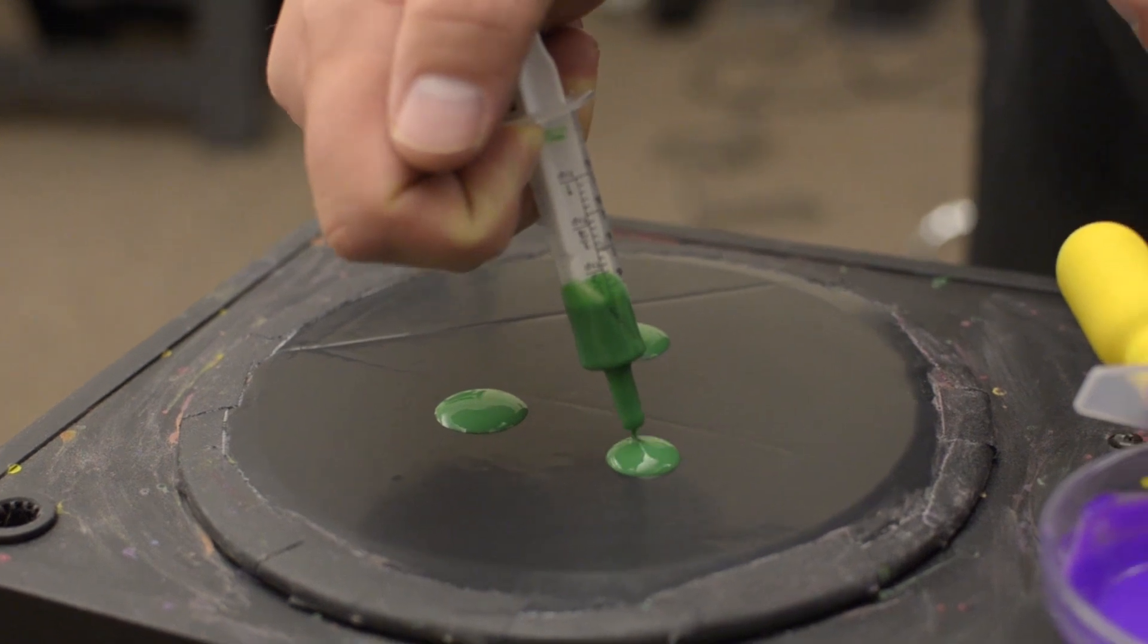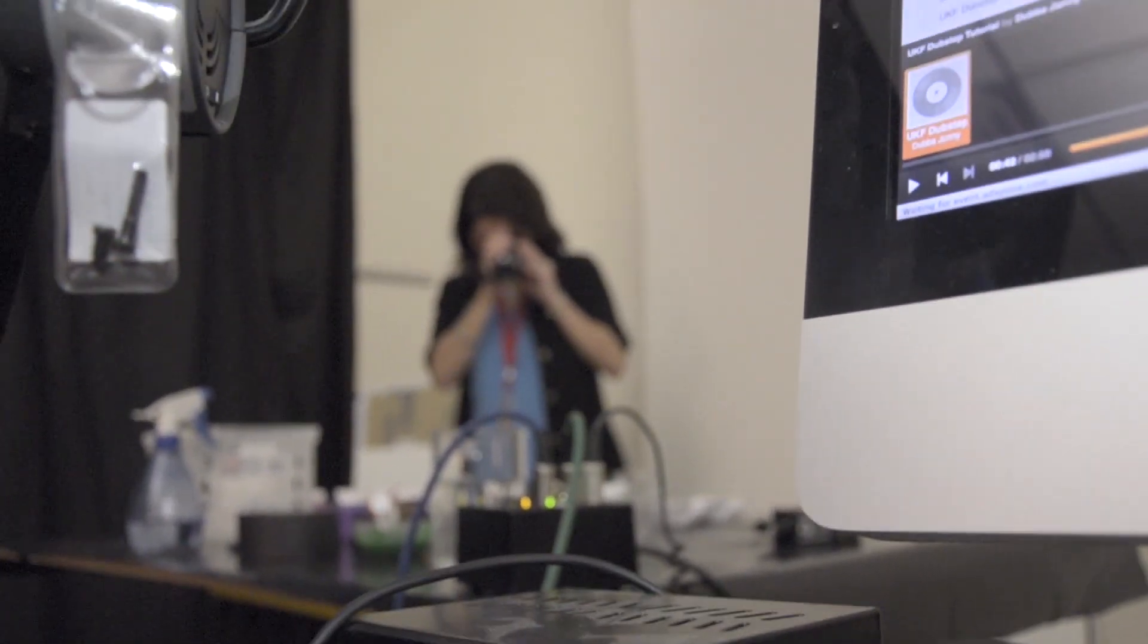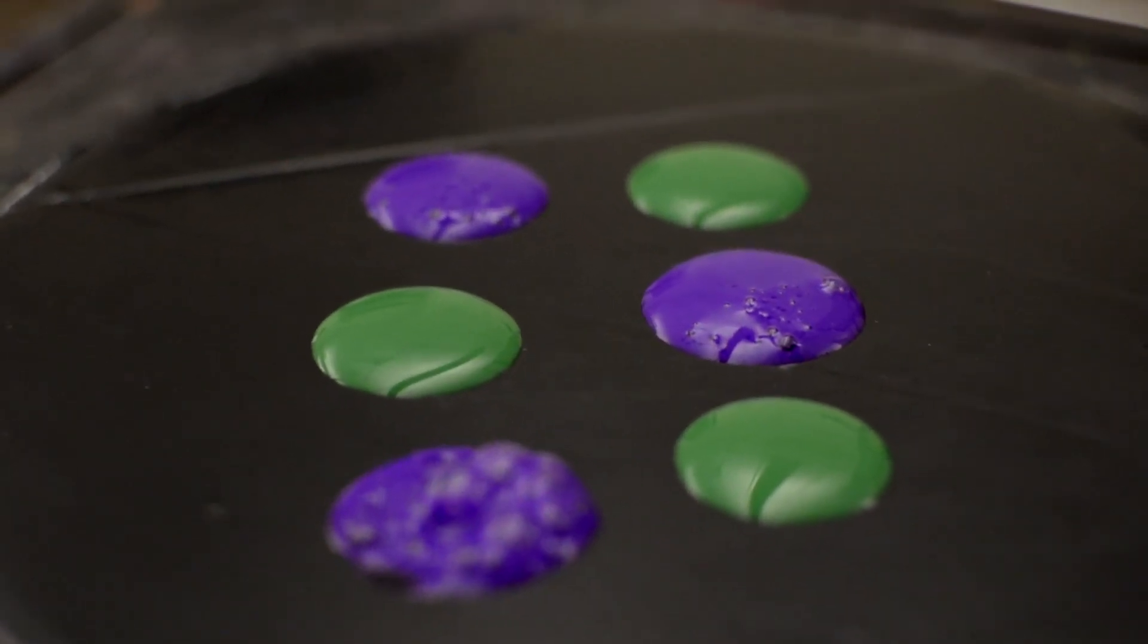We got our speaker at a thrift store and hooked it up to a Mac with a small amp in between. When we play the music the speaker thumps, the plastic vibrates, and the paint splashes.